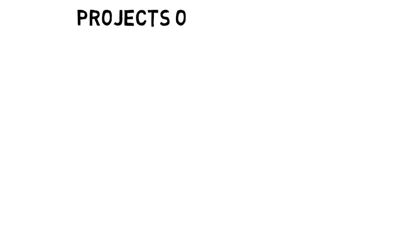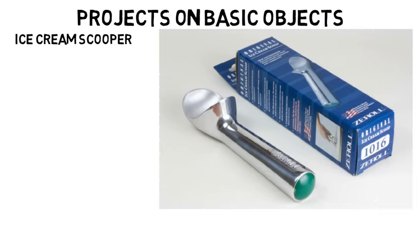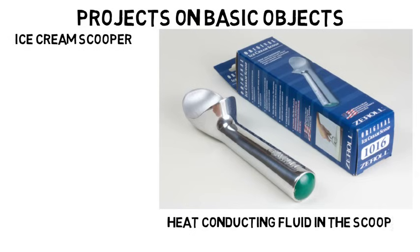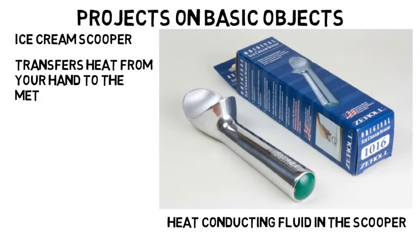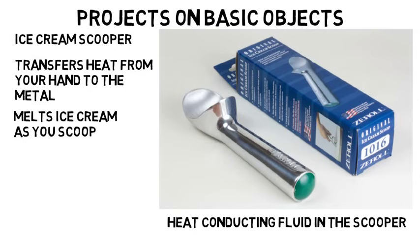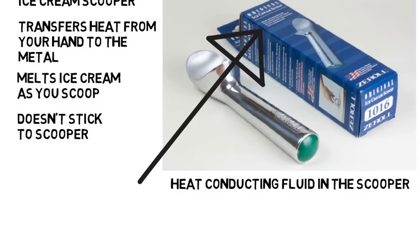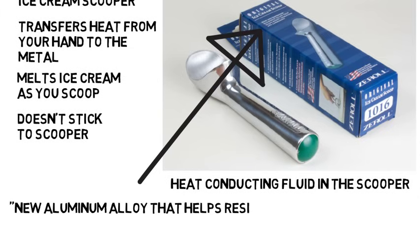You may do projects or reports on basic objects but go into depth on the material beyond what you may know. For instance, at one school students did a project on an ice cream scooper. What you may not know is that there is heat-conducting fluid within the scooper, designed to transfer the heat from your hand to the metal, warming it so that when you scoop the ice cream it melts it slightly — making it easier to scoop and preventing ice cream from sticking. Also, the box says it features a new aluminum alloy that helps resist corrosion. Hopefully you're seeing how the materials in nearly everything, down to a simple ice cream scooper, are optimized by designers, and how corrosion is a huge field as well.